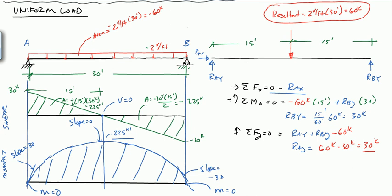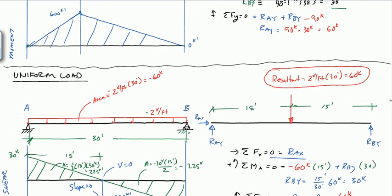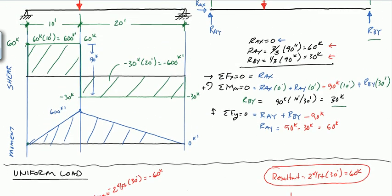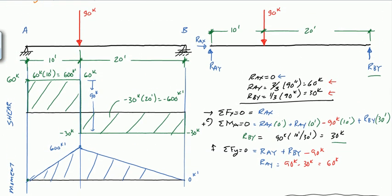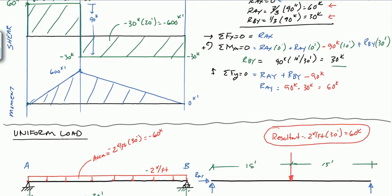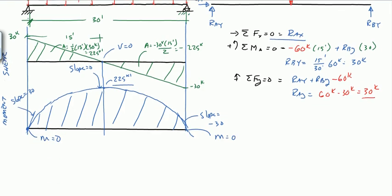So we have a shear diagram and a moment diagram for a uniform load: the shear forms two triangles and the moment forms a parabola. For a point load, we get rectangles and triangles. What happens if we combine them?